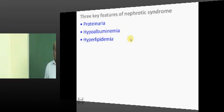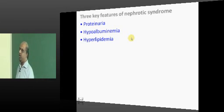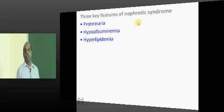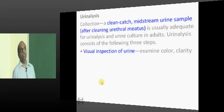What are the three key features of nephrotic syndrome? Proteinuria, hyperlipidemia, and hypoalbuminemia.